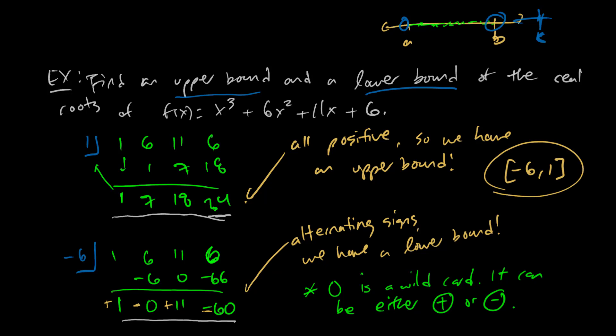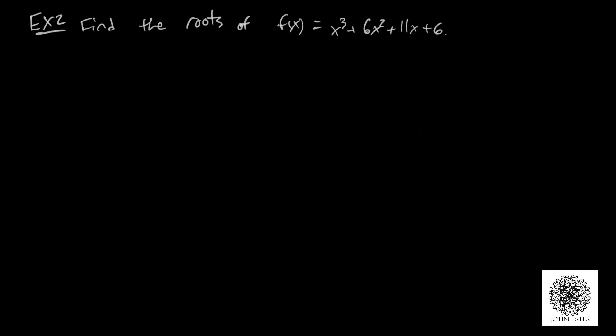Now how do we actually find what they are? Let's revisit the rational root theorem. The rational root theorem says if I have a fraction p over q that is a root of this function, the p, the numerator, divides the constant term.